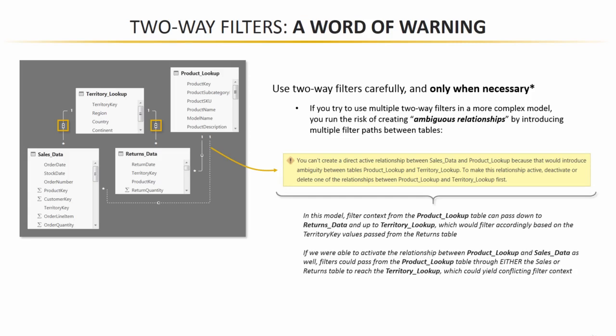So what we've done in this hypothetical situation is pass two conflicting sets of filter context to that same territory lookup table. The returns data table is telling the territory lookup that the only territories that exist are 7 and 8, and the sales data table is passing along different information and saying that territories 1, 2, 3, 7, and 8 are the five territories that exist. So that's what we mean by ambiguity. Both can't be true at the same time, and all we end up doing is confusing Power BI and confusing that territory lookup table in a way that prevents our model from producing or yielding meaningful values. So as a result, Power BI forces you to keep one of those relationships inactive so that you can't possibly pass conflicting filter context to the same table.